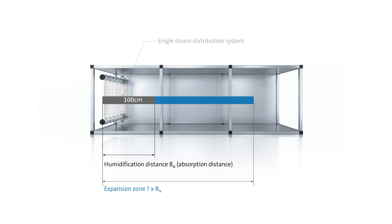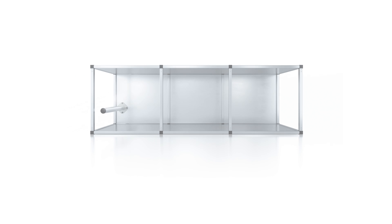In this way, the original distance of 1 meter could be reduced to just a quarter of this value. Finally, the expansion zone needs to be determined. Once the humidification distance BN has been calculated,